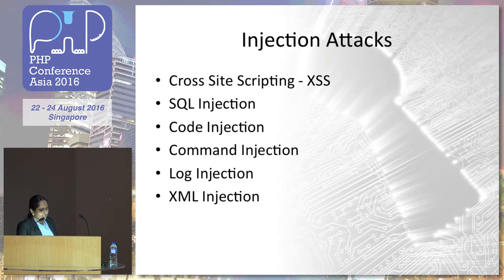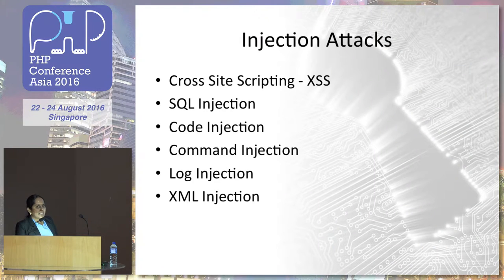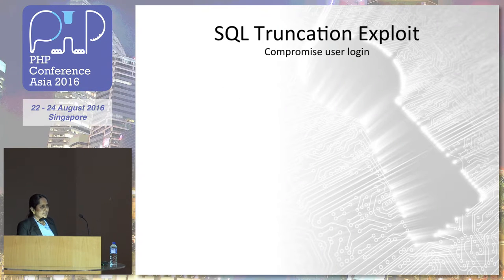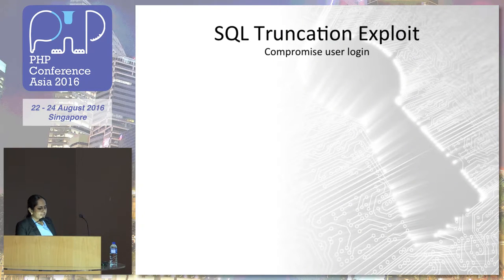How to prevent these kinds of injection attacks: never trust foreign input in your code. Always sanitize and validate your input. You can use filter functions, XML entities, and XML special character escaping — those are the kinds of things you can use for validating input.